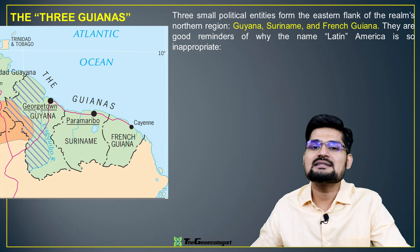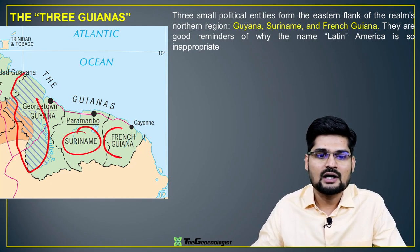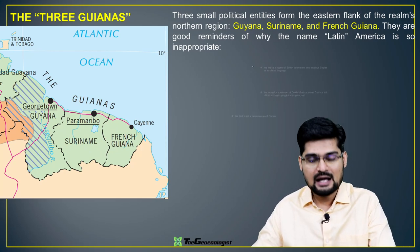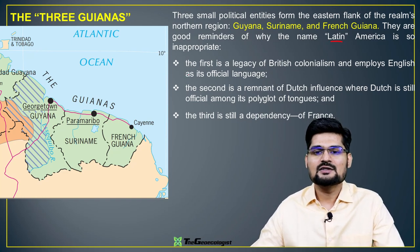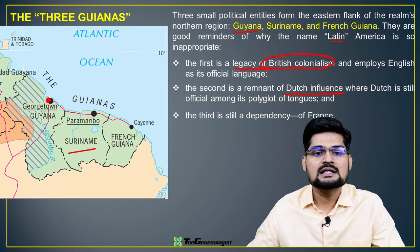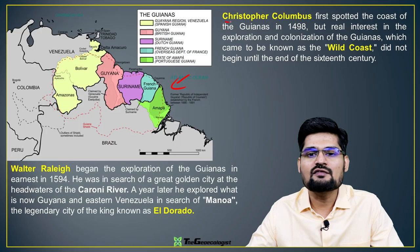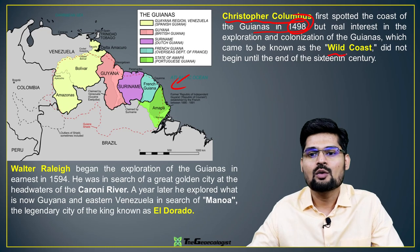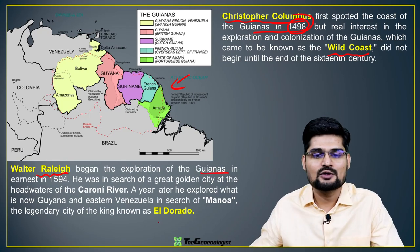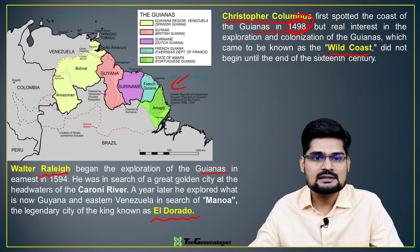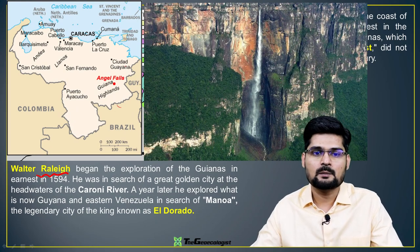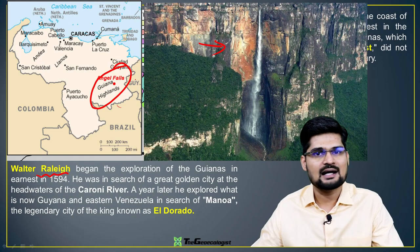The three Guyanas — Guyana, Suriname, and French Guiana — are very important in Caribbean North, connected to the Atlantic Ocean and Caribbean Sea. Guyana has a legacy of British colonialism with capital Georgetown; Suriname has Dutch influence; and French Guiana is a dependency of France. Christopher Columbus first spotted the coast of the Guyanas in 1498. Explorer Walter Raleigh began exploration of the Guyanas in search of gold and the famous city of gold called El Dorado. Also notable is Angel Falls in Venezuela, part of the Guiana Highlands — the highest waterfall in the world.